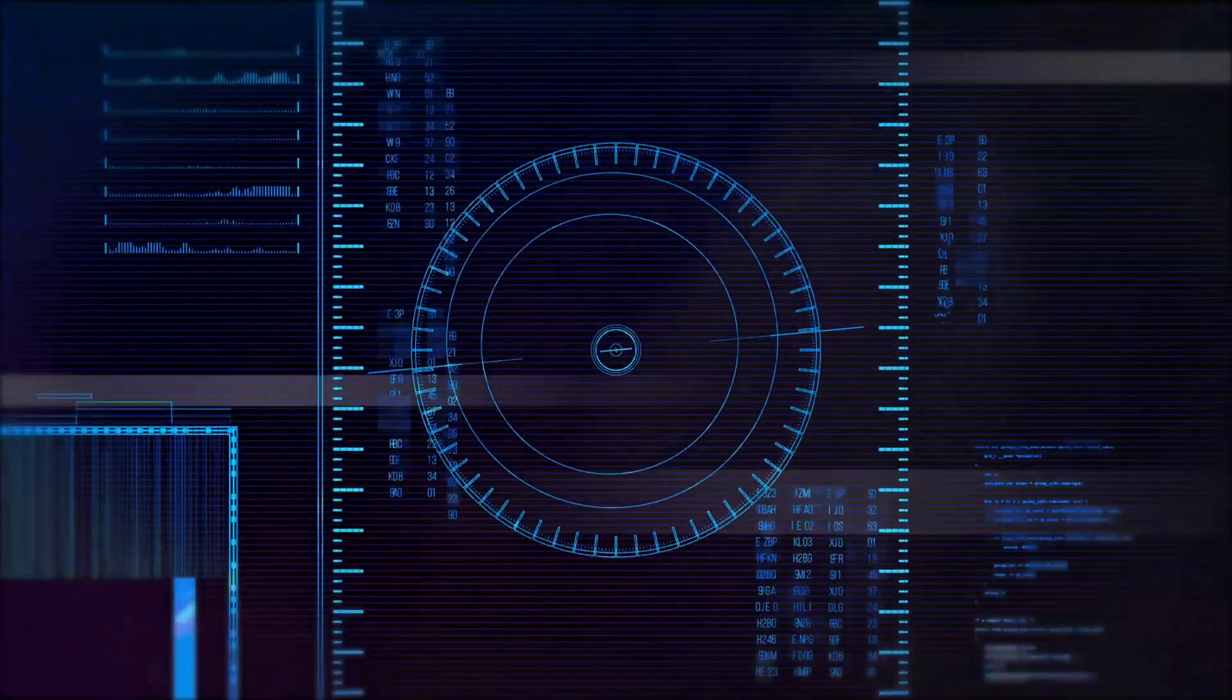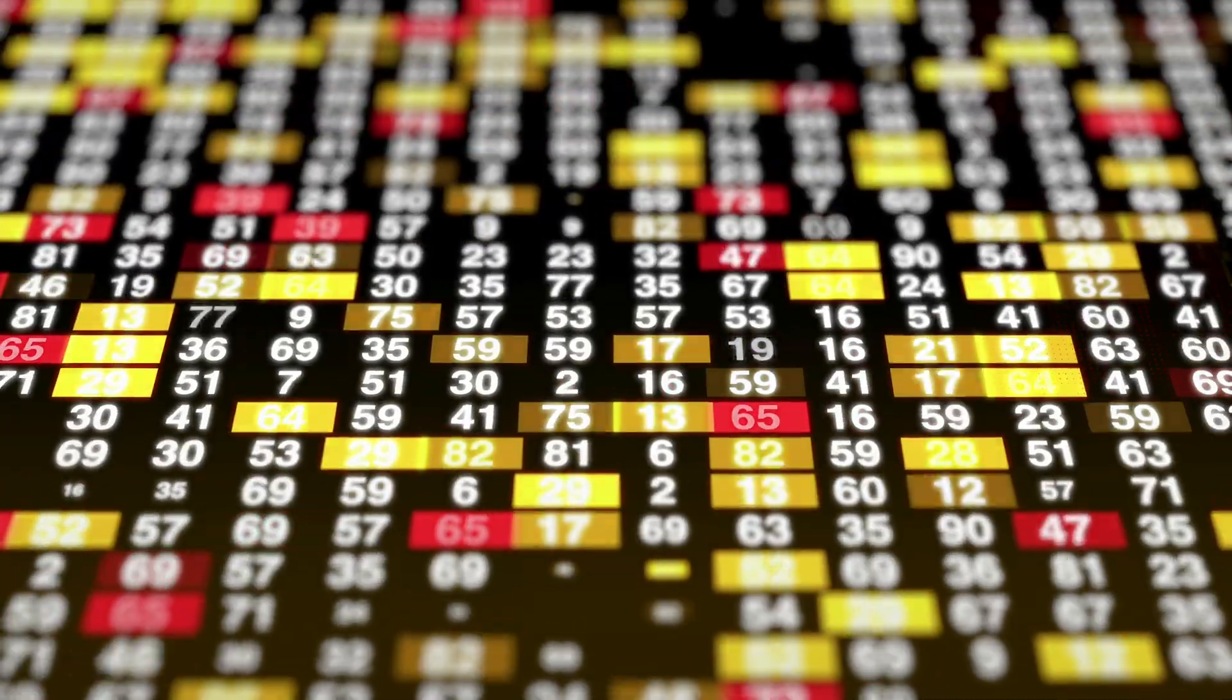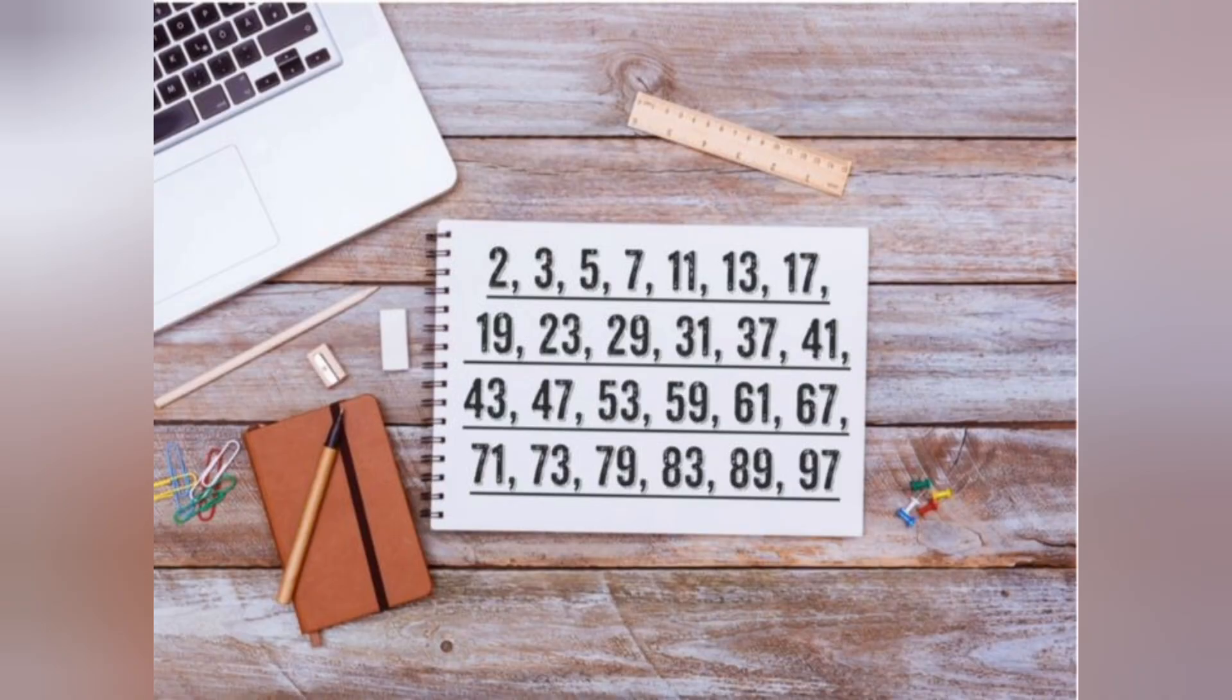Alright, let's start with the basics. Prime numbers are numbers that can only be divided by 1 and themselves. Like 2, 3, 5, 7, you get the idea.